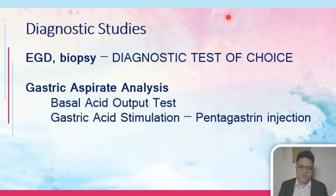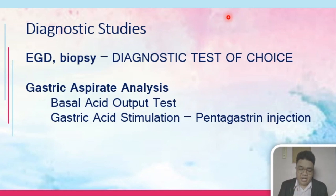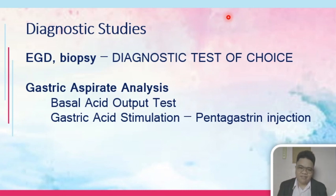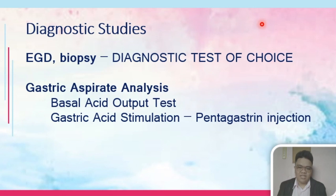Diagnostic studies include EGD — esophagogastroduodenoscopy — where biopsy can be performed to identify the underlying cause: H. pylori, virus, fungal infection, or neoplastic growth. We also have gastric aspirate analysis with two kinds: the basal acid output test, which measures the amount of hydrochloric acid secreted by the stomach, and the gastric acid stimulation test, where drugs such as pentagastrin are injected to stimulate acid production and then the acid is measured.